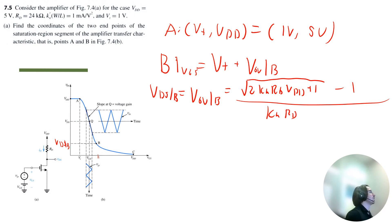So let's solve for VDS at B. That's equal to the square root of 2 times Kn, which is 1 milliamp per volt squared, times RD, 24 kilo ohms, times VDD, 5 volts, plus 1. Notice that milliamp is 10 to the power of negative 3, and kilo ohm is 10 to the power of 3, so those powers will cancel out. Now we subtract 1, and we're going to divide it by 1 times 24.